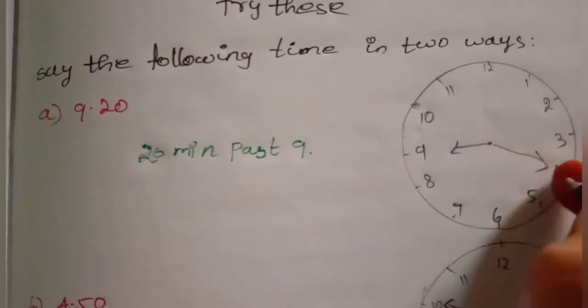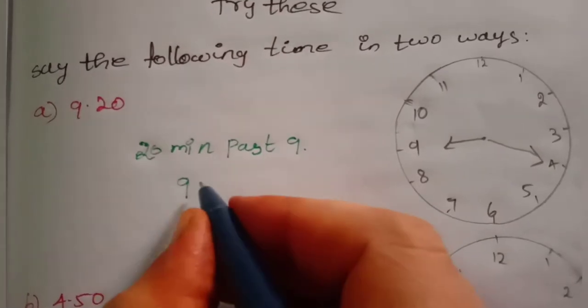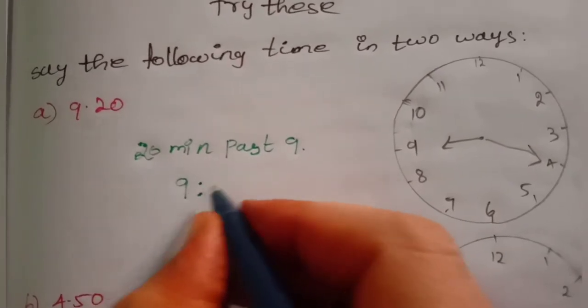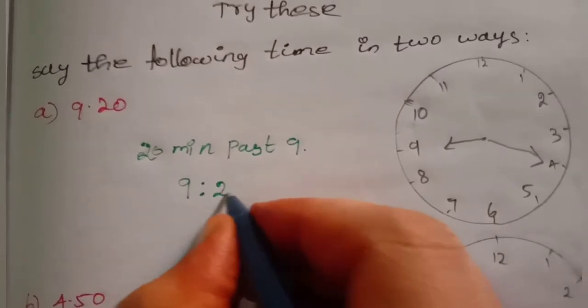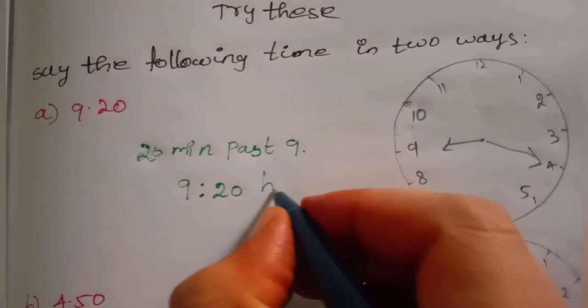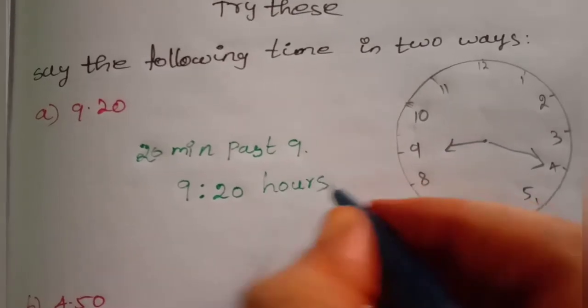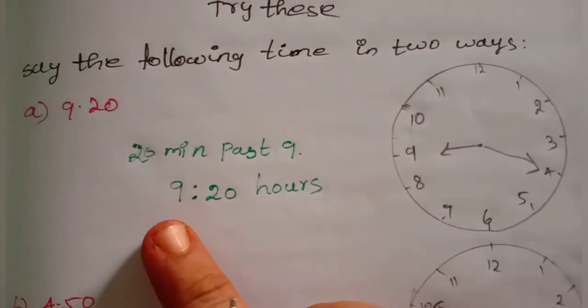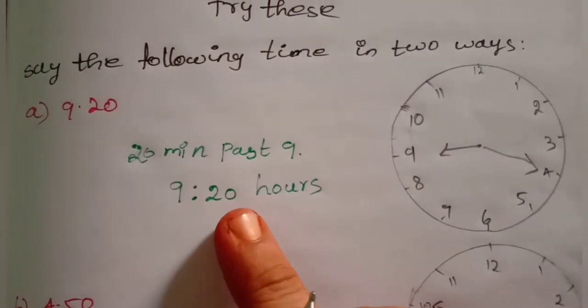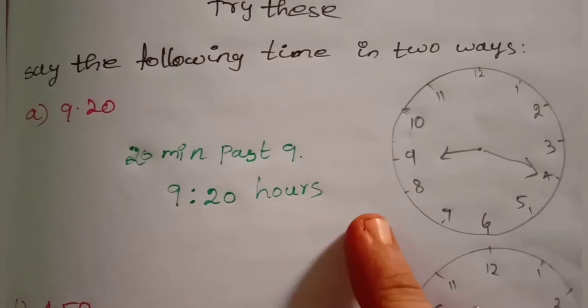This time we say: 9 o'clock, 20 minutes — that's how we say it. 20 minutes past 9.